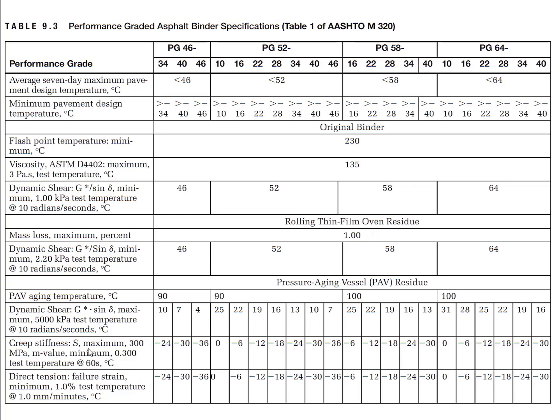These are the required parameters for different grades. Unlike previous specification systems — which performed tests at a fixed temperature and varied the requirements for different grades — the performance grade system requires performing tests at varying critical temperatures while fixing the criteria for all grades of asphalt binder. This philosophy ensures that all asphalt properties meet the specification criteria at critical pavement temperatures, which is a significant improvement in the specification system.